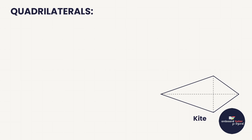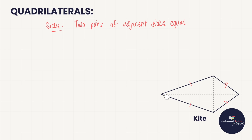Last in our quadrilateral lineup is the kite. What do we know about its sides? It has two pairs of adjacent sides that are equal — adjacent means next to. So these two sides next to each other are equal, and these two sides next to each other are equal. Then the angles: there is one pair of opposite angles that are equal — this angle here equals this angle here.